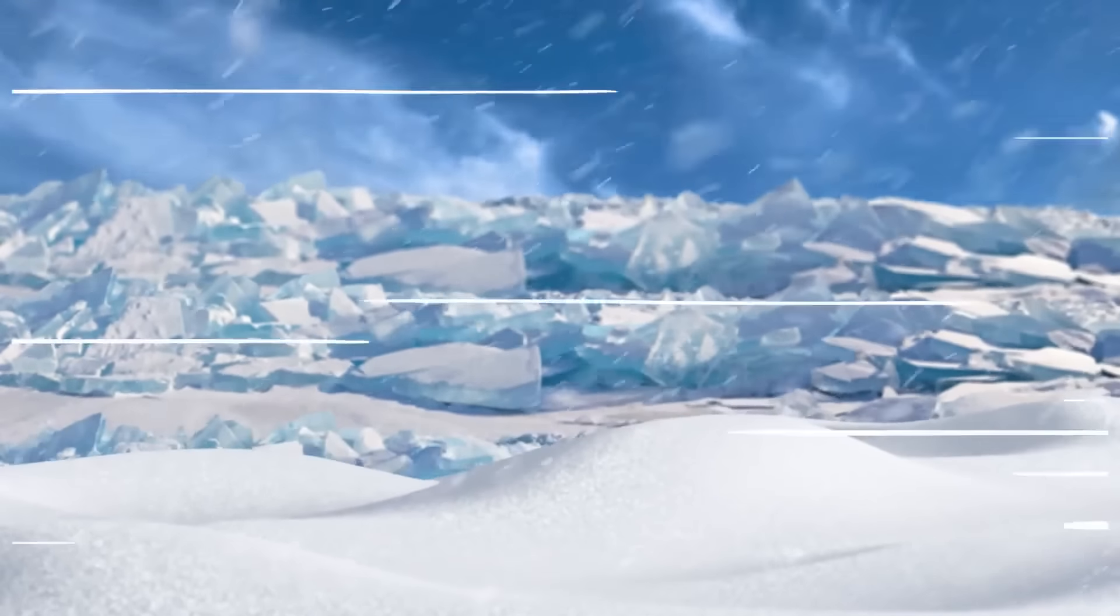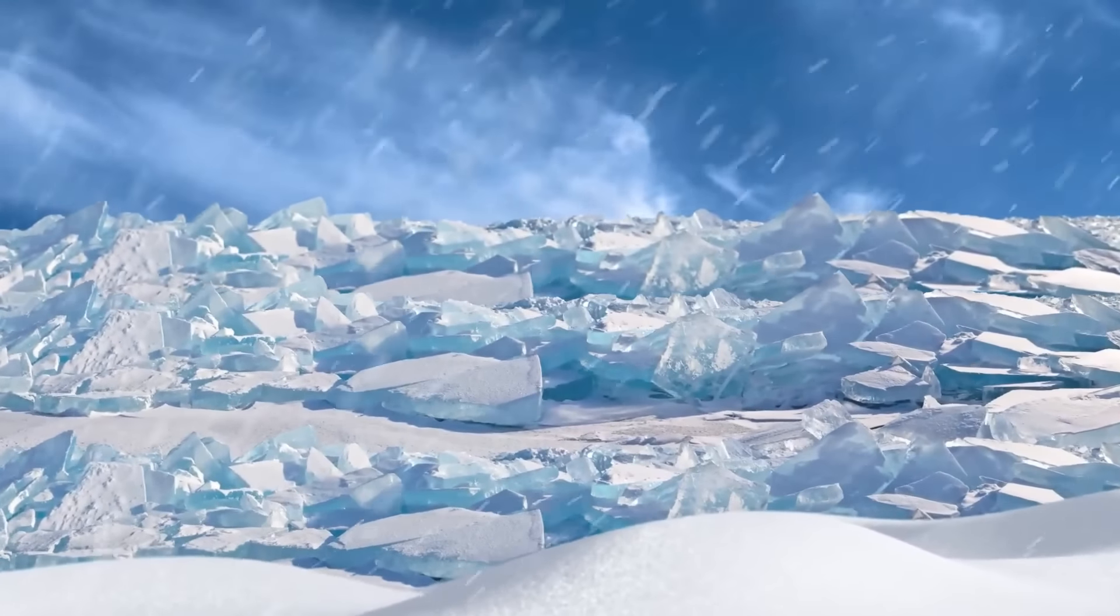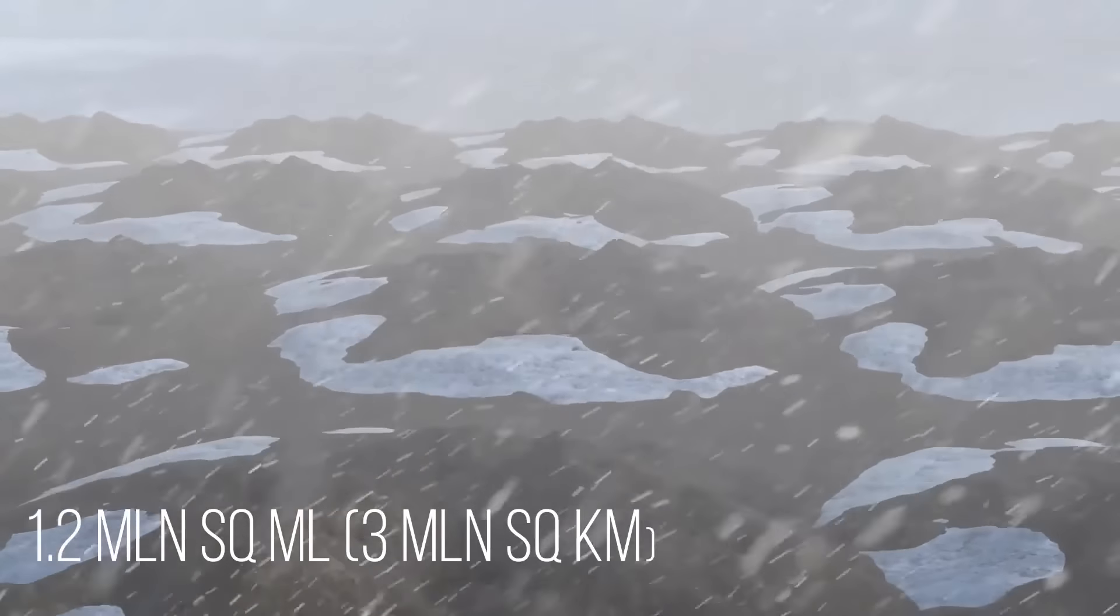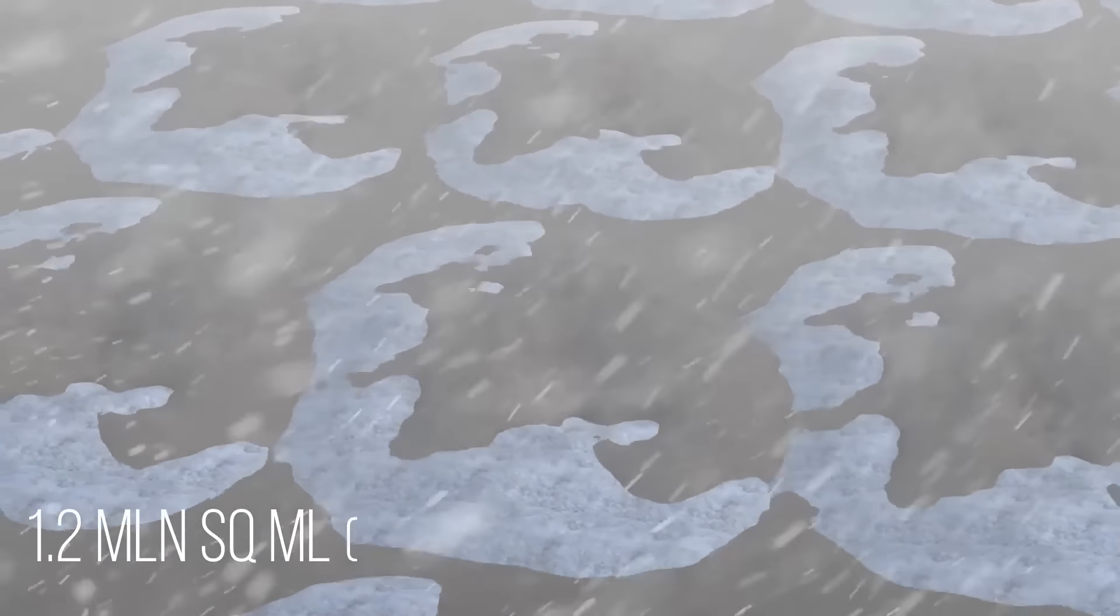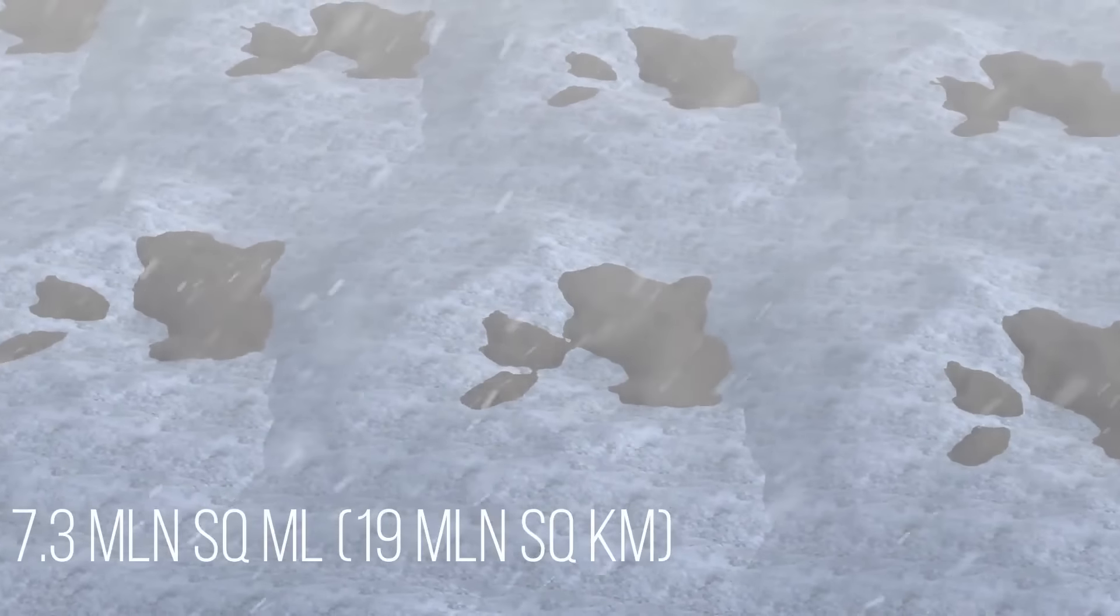Did you know that the size of the ice surface on Antarctica also changes throughout the year? It's about 1.2 million square miles during the summer. But when it's winter, it grows to 7.3 million square miles.